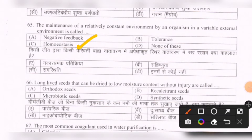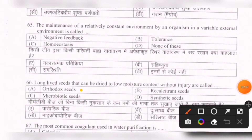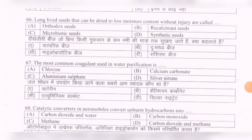Next question: Long-lived seeds that can be dried to low moisture content without injury are called — options are: orthodox seeds, recalcitrant seeds, microbiotic seeds, synthetic seeds. The correct option is A — orthodox seeds.